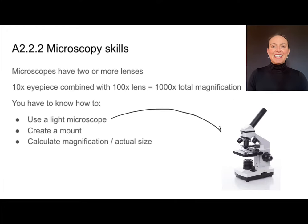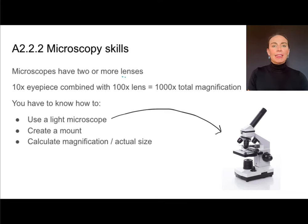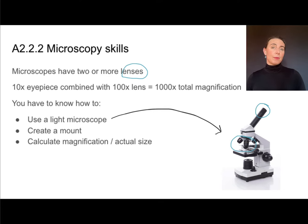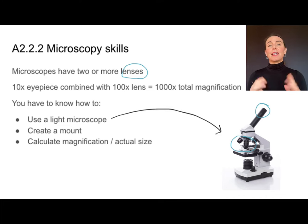This is a light microscope, and we have to know how to use one of these. They're going to have two or more lenses — one in the eyepiece and a set of interchangeable lenses with different magnifications. We can get up to a thousand times magnification with these light microscopes. You need to be able to use a light microscope, create a microscope mount, and calculate magnification and actual size of images.